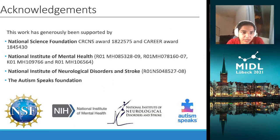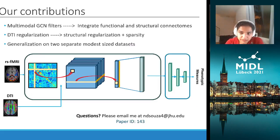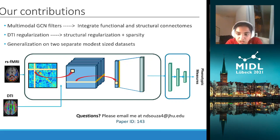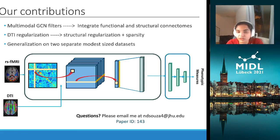Before concluding, we acknowledge our funding agencies. To summarize our contributions: we have proposed a novel multimodal GCN to fuse together structural and functional connectivity data. Our structural graphs act as regularizers on the optimization, which boosts performance and gives rise to selectivity in the learned patterns. Finally, our framework learns to effectively generalize on two datasets of modest sizes, which is a challenging paradigm both in clinical neuroimaging and the deep learning space. Thank you for listening, and if you have any questions, feel free to reach out.